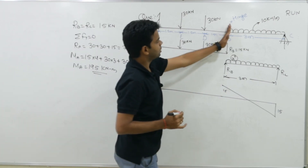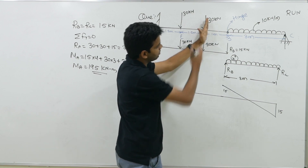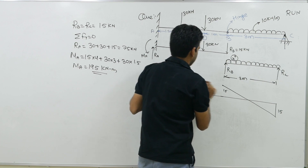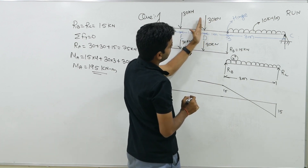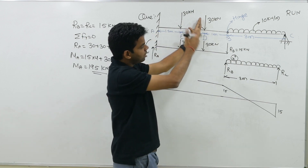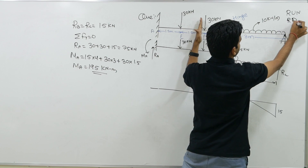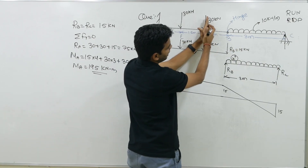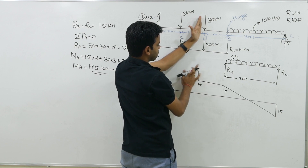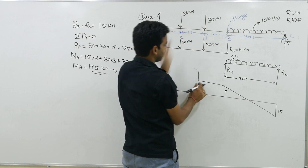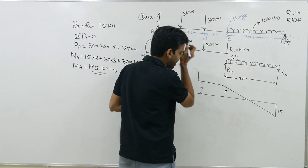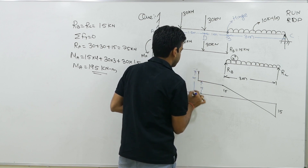From B to D there is no variation in load, so the shear force is constant at +15. Just to the right of D, shear force is still +15. Just to the left of D, the 30 kN load acts downward (right-side downward is positive), so +15 + 30 = +45. So at point D, shear force varies from +15 to +45.